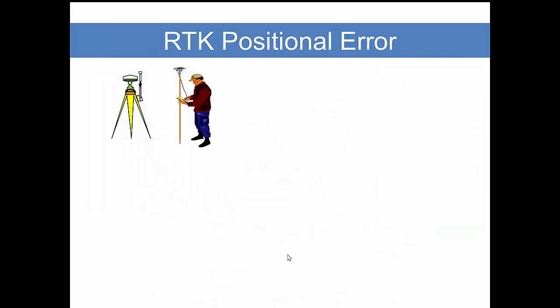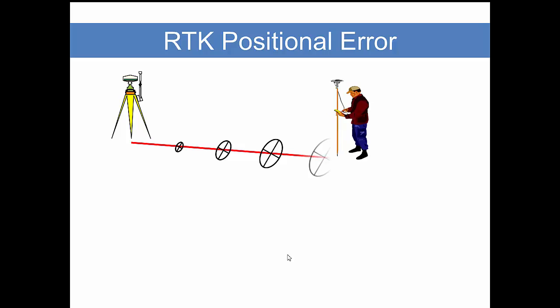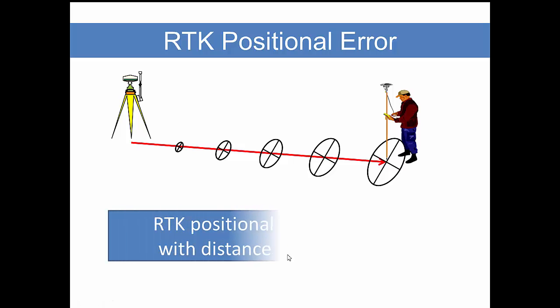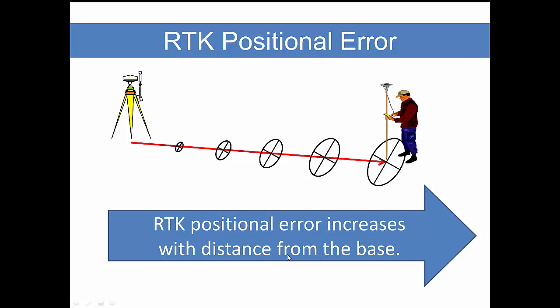Positional error with RTK increases with distance from the base. That is, the farther you get from the base, the larger the error is. RTK positional error increases with distance from the base. This is true when you are using only two receivers, a base and a rover.